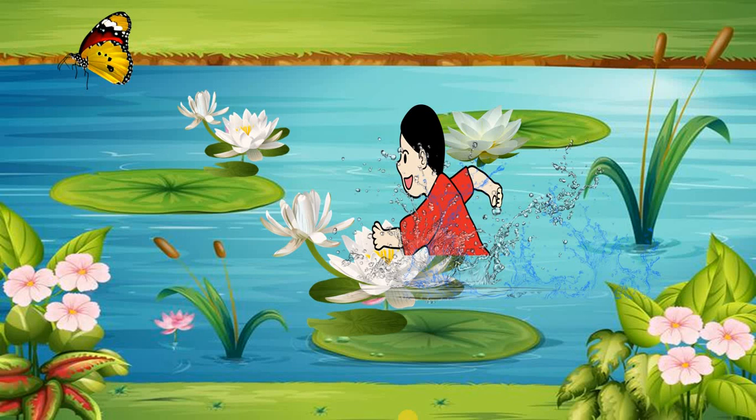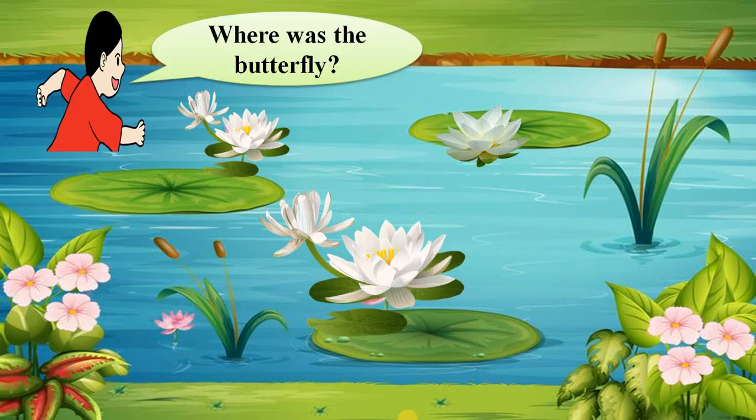Butterfly ko to udna hi tha. Kyunki Sonu ke jump karte hi pani mein movement hua. Butterfly ko pata chal gaya. Ushe catch karna itna aasan thodi na tha. Now Sonu started looking here and there. He thought, there was the butterfly. Sonu looked up, he looked down.